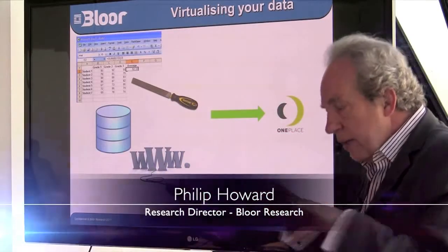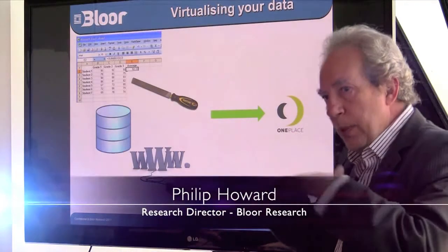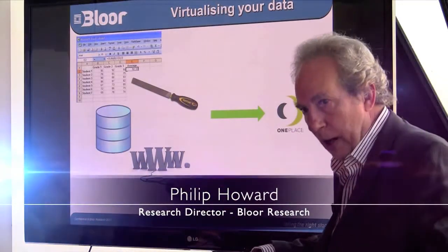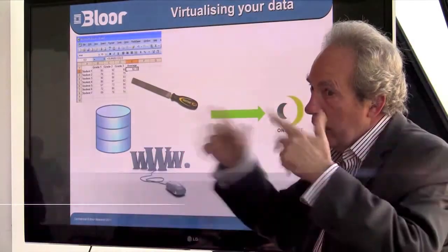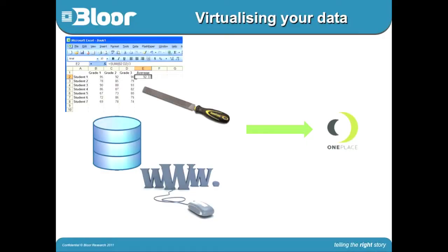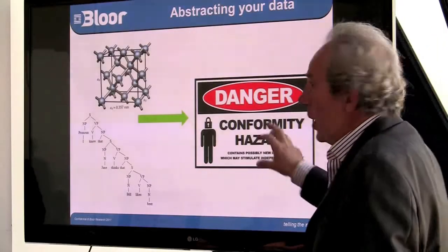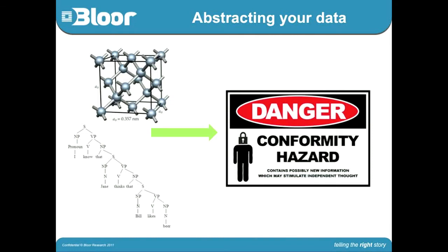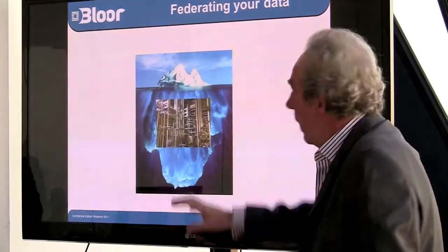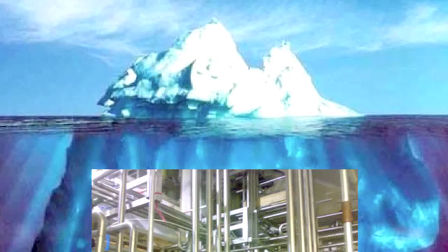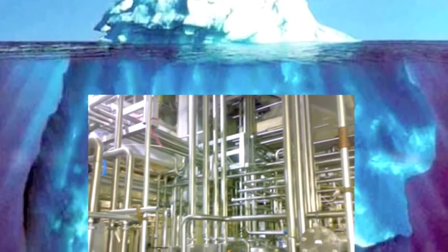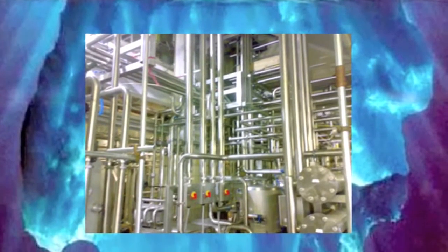Data virtualization software is an infrastructure layer that sits between the data sources, whatever they are, and whatever application is going to access that data. It makes wherever your data is look to the receiving application as if it's all in one place. It abstracts your data and conforms it so that it's all in a consistent format. Think of it like an iceberg — this is what your BI tool or application sees, and then there's a whole bunch of plumbing which composite software hides away from that application.